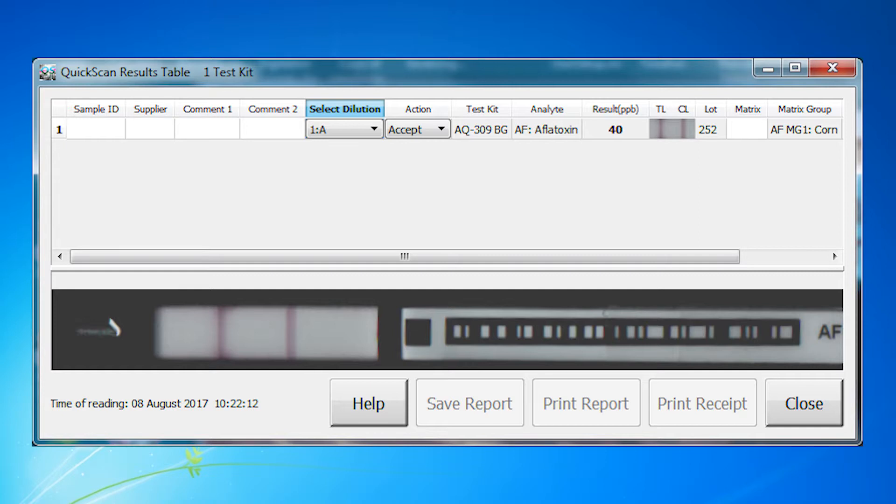Adjusted results are valid in the range of 30 to 100 parts per billion. If your sample results from dilution A testing are greater than 100 parts per billion and you desire additional quantitation, you may run the dilution B protocol.